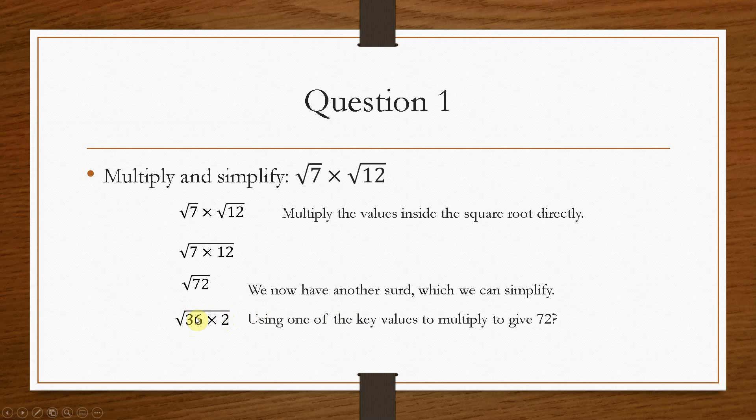And the value of 2 being the lowest surd possible. So when we split these apart, we end up with the square root of 36 times the square root of 2, which gives us our final answer as 6√2, and this is in its simplest form.